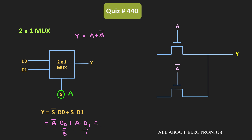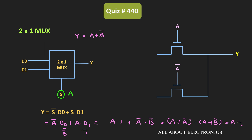If we take d1 as 1 and d0 as b̄, then we can write the expression as ā·d0 + a·d1. Using the distributive law, this becomes a + ā·(a + b̄). And as you know, a + ā is equal to 1, so eventually we get a + b̄. That means d0 input should be equal to b̄, while d1 input should be equal to 1. In this way it is possible to implement a + b̄.